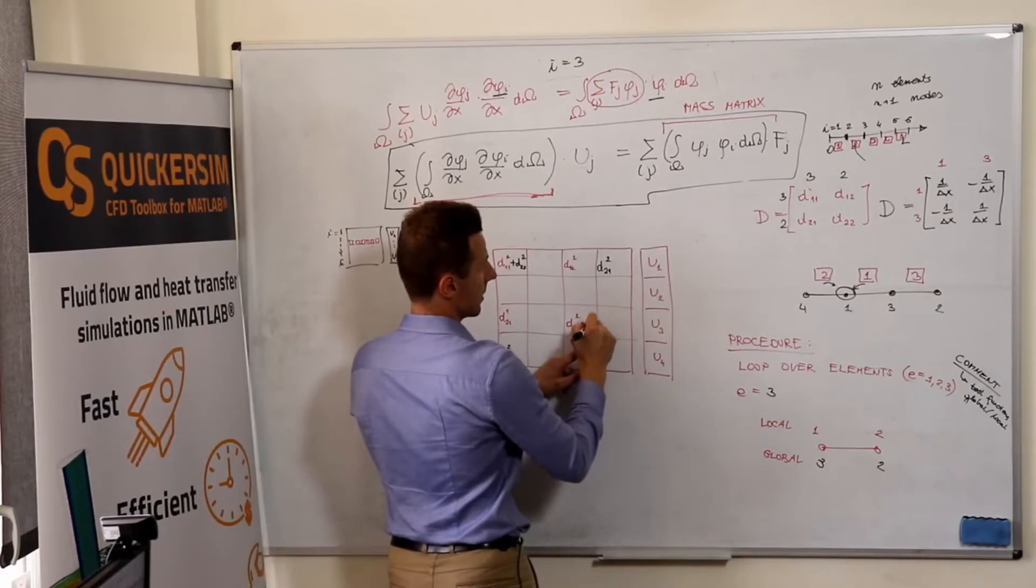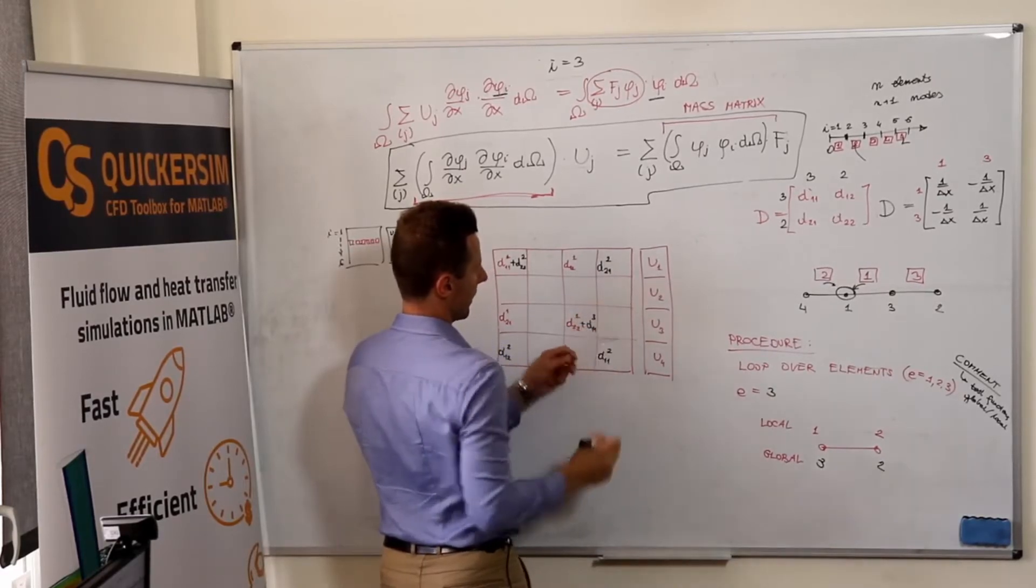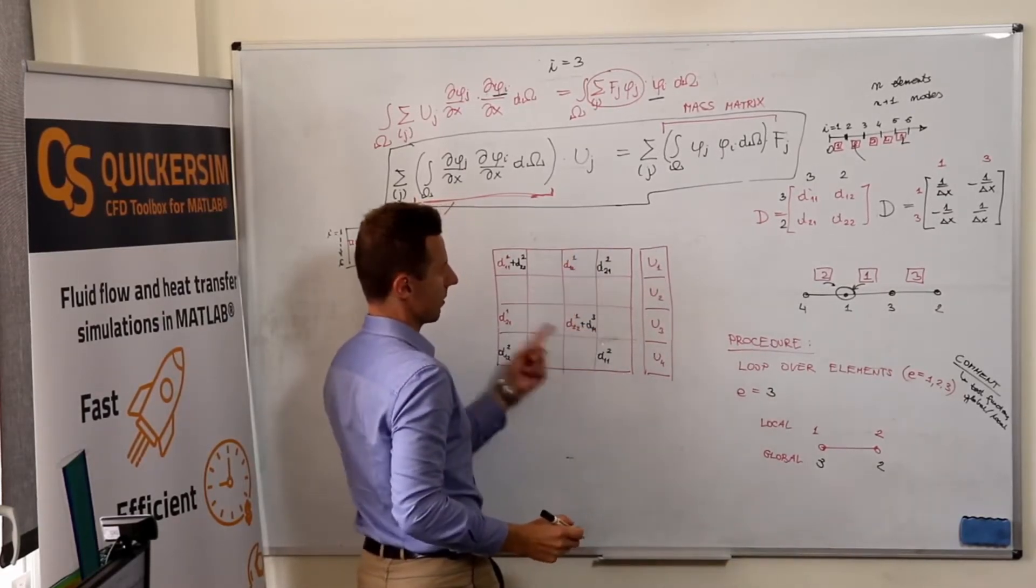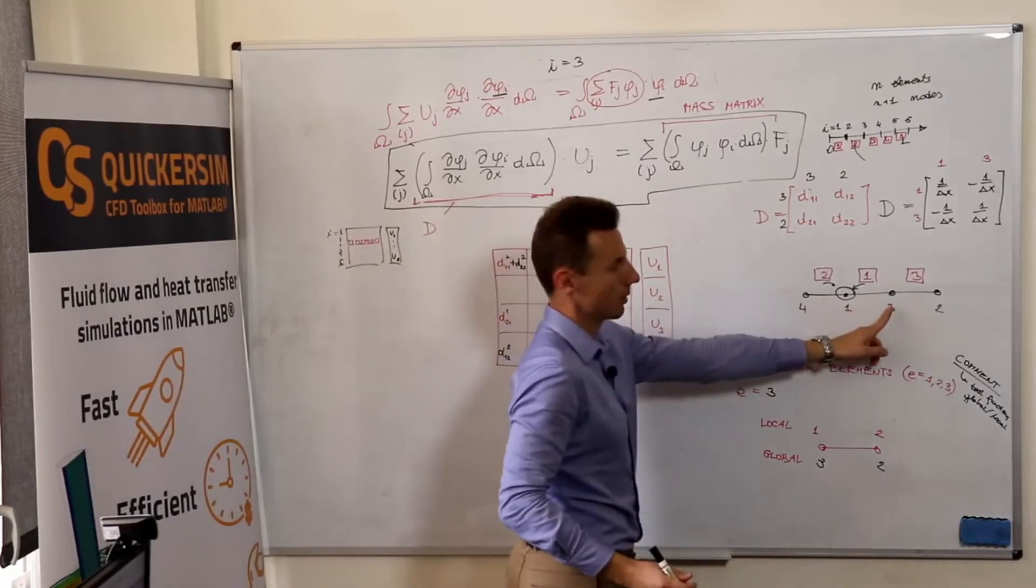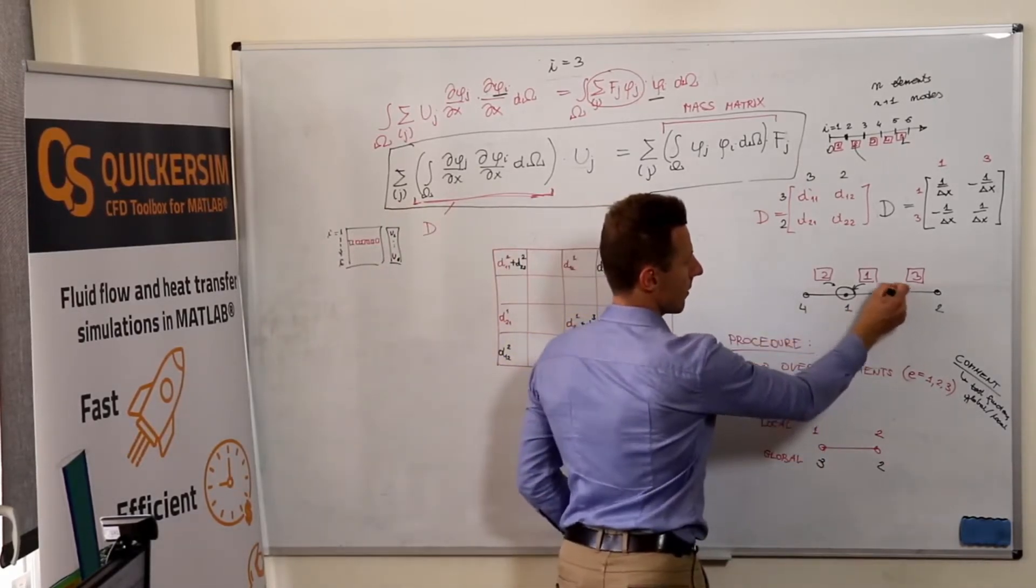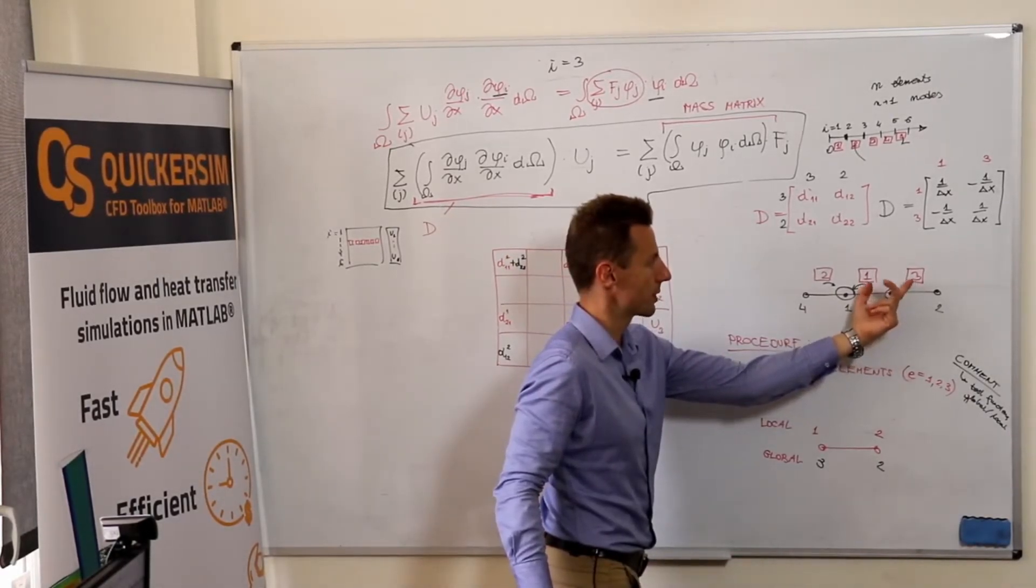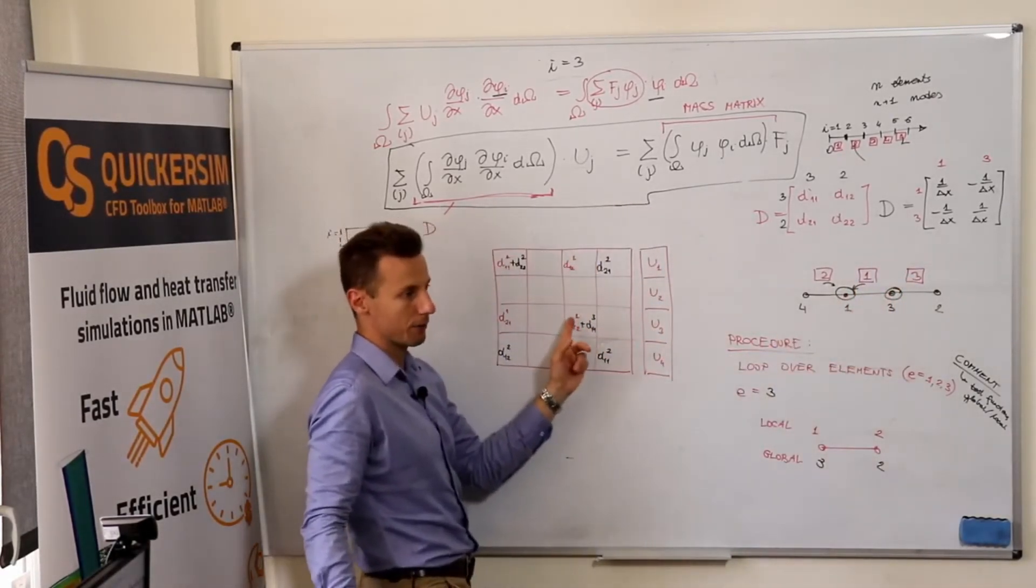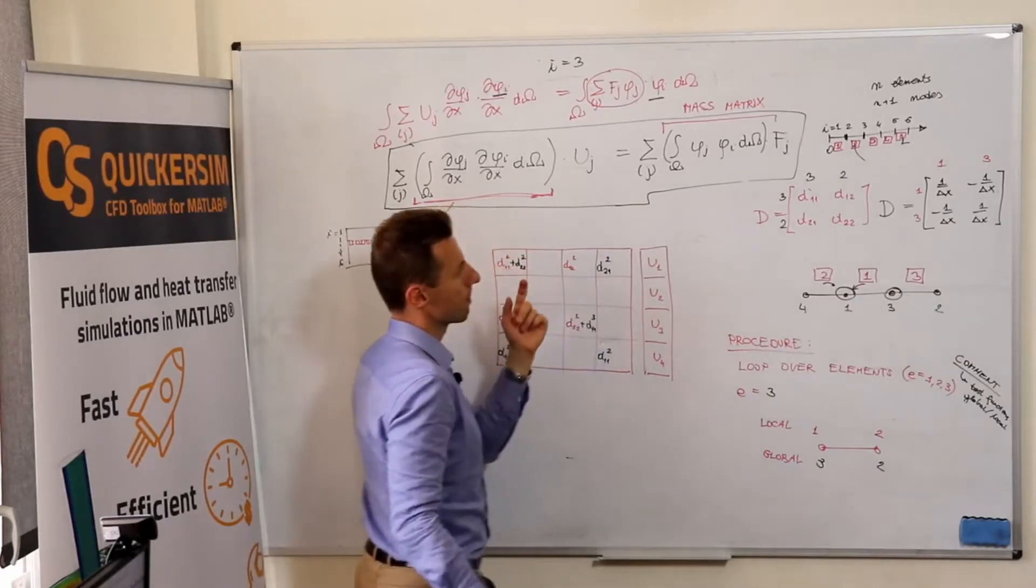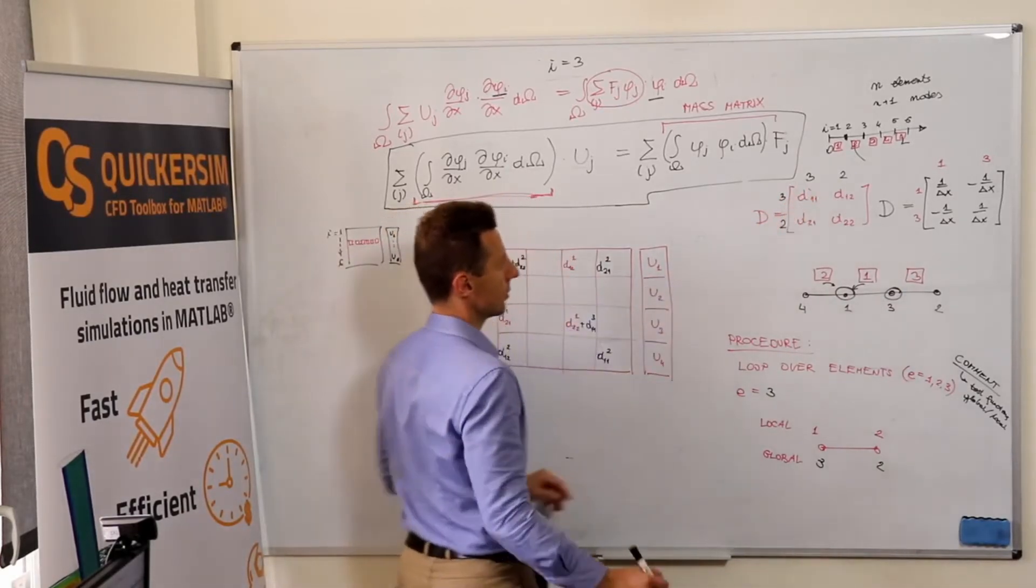Well, it doesn't make sense. Third node, yes, it makes sense. Third node is where both the first and the third element give contributions. Now, three-two. So, we are three-two.